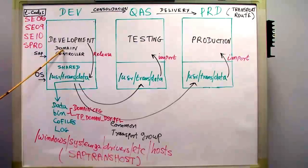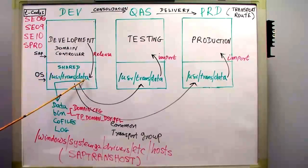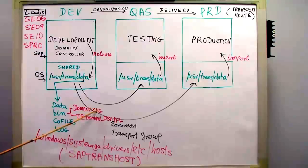The domain controller will have under the directory usr/trans the subdirectories: data, bin, domain.cfg, and TP_DOMAIN.dsy profile. When we create a domain controller using STMS as DDIC in client 000, these are created automatically, and the TMS user is also created automatically.